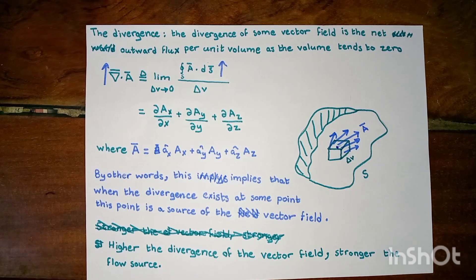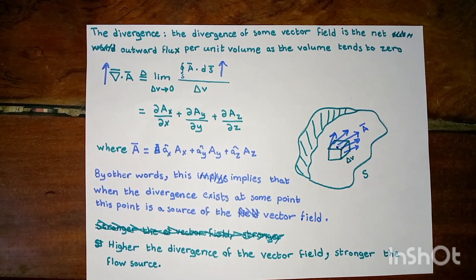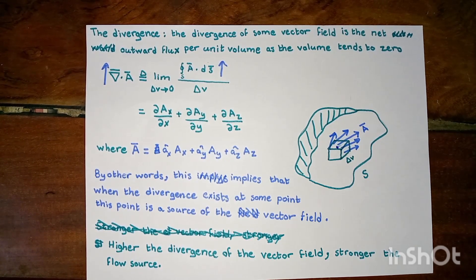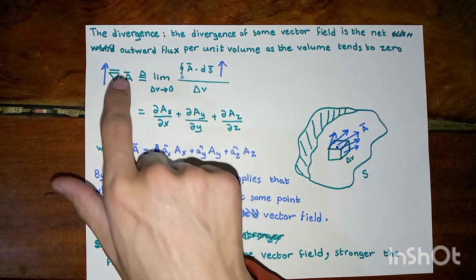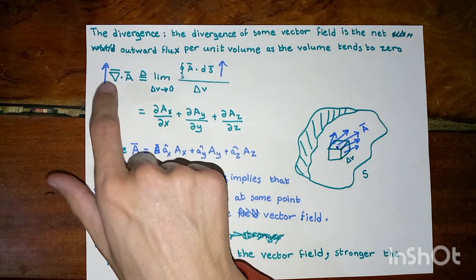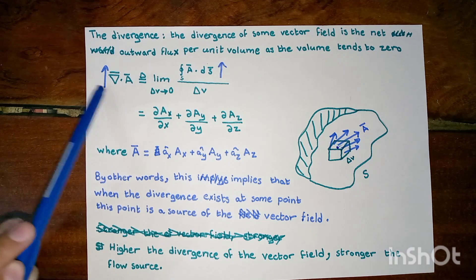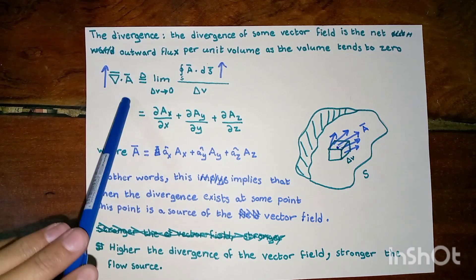Let us talk about the definition of divergence. The divergence of some vector field is the net outward flux per unit volume as this volume tends to zero. The divergence is the dot product between the del operator and the vector A.